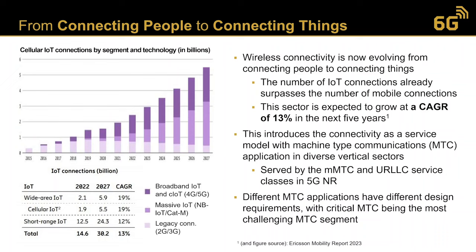Already today, the number of IoT connections exceeds the number of mobile connections, and this sector is expected to grow at a cumulative annual growth rate of 13% in the next five years. If you also consider other technologies like low power wide area networks, LoRa, and MoAN, the number of connections is much more and the growth rate is closer to 20%. Machine type communication was already being served by wireless networks from the 2G era — for example, connecting point-of-sales terminals using GSM, or narrowband IoT in LTE — culminating in dedicated service classes for MTC in the 5G era, namely MMTC and URLLC.